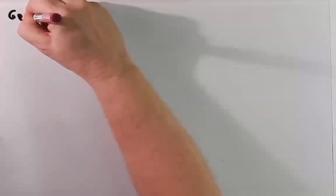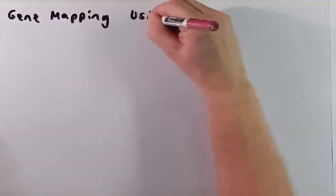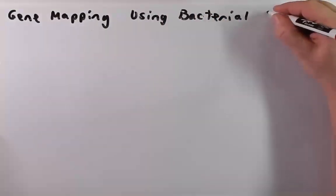Hello everyone and welcome to this podcast. I hope everyone's doing well. In this podcast we're going to talk about how we map genes in bacteria using bacterial conjugation. As we go through this we're going to review some terms that are important to understand in microbiology as well as terms important to understand as we move forward with genetics. Let's go ahead and get started with this topic of gene mapping using bacterial conjugation.